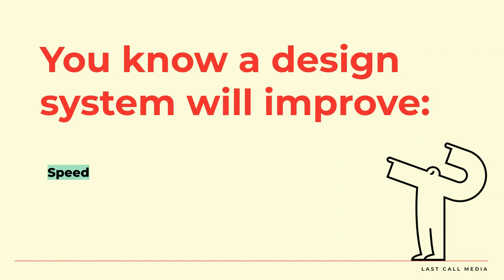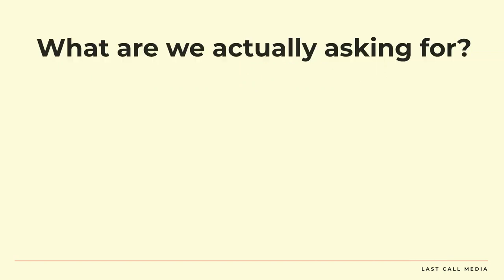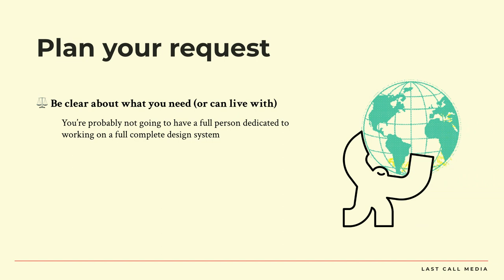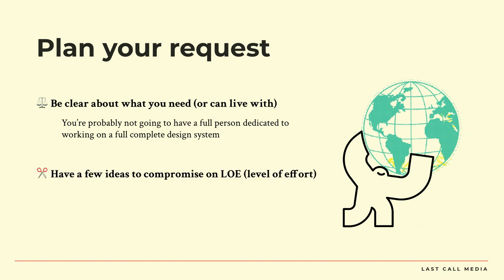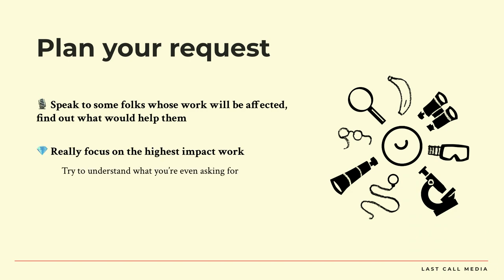A design system is going to improve your speed, consistency, accessibility of the components, your prototyping, and your communication with development. But sometimes those don't resonate with everybody on the team and the stakeholders. So a good way to think about it is: what are we actually asking for? Have a plan. Be clear about what you need or what you can live with. You're probably not going to have a full person dedicated to working on a complete design system, but think about what levels of effort you can compromise on. Think about different amounts of time and how helpful each level of completion might be. Talk to folks that are going to be affected — find out what would help them — and try to focus on the highest impact work.